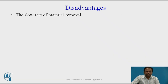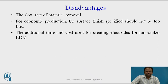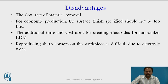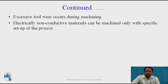Limitations and disadvantages: The rate of material removal is slow. For economic production, the surface finish specified should not be too fine. Additional time and cost are required for creating electrodes for ram/sinker EDM. Reproducing sharp corners on the workpiece is difficult due to electrode wear. Power consumption is very high. Overcut is formed. Excessive tool wear occurs during machining. Electrically non-conductive materials can only be machined with a specific setup.